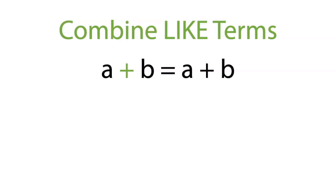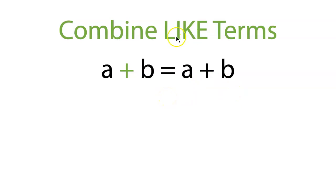Your most critical rule for combining like terms is: don't combine unlike terms. This will hopefully feel pretty intuitive. If you had one apple and one banana, you would not say, 'I have one a-banana,' because that's not a thing. That's not how this works. So a plus b just equals a plus b.